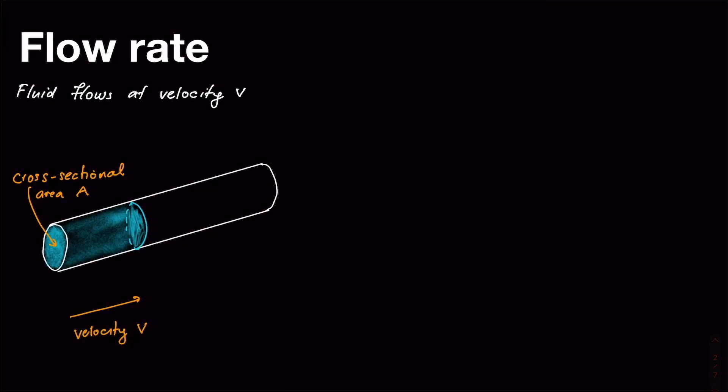So far we've been looking at hydrostatics — what happens with fluids where they're basically just sitting there. We learned that pressure increases with depth, but now we'd like to start understanding what happens to fluids where there's flow involved. We have a prototype situation: a pipe with a certain cross-sectional area A, and the fluid is flowing at that point at a velocity V. We want to define a couple of terms to make sense of things here.